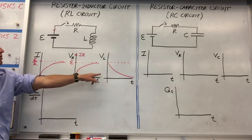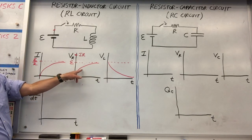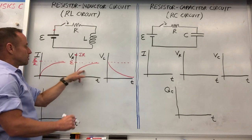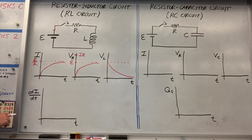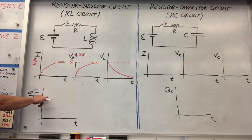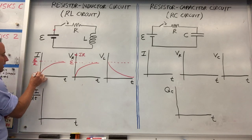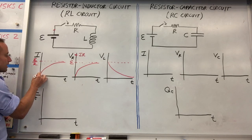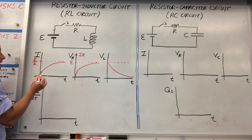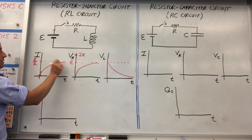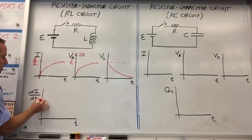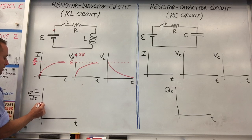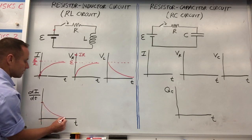The inductor voltage is just doing whatever the resistor voltage isn't — these are exponential approaches to steady values, and the inductor voltage is an exponential decay. We can also look at the rate of change of current. In the early going, the rate of change of current is really large and positive, and then it tapers off to zero as the current reaches a steady value.